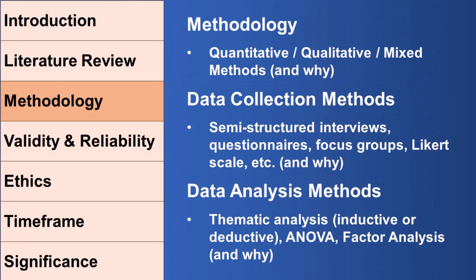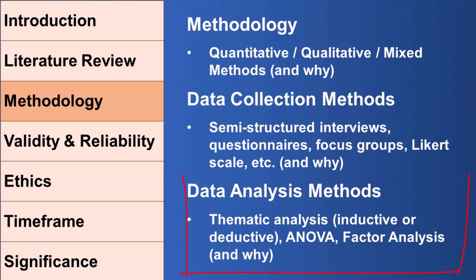Now that you've done your literature review, you would move on to your methodology. The general structure of your methodology section is that you'll start by stating what methodology you're using — whether it's quantitative, qualitative, or a mix of the two. Then you zoom down into the data collection methods, whether it's through interviews, questionnaires, focus groups, Likert scales, or any other way you'll collect your data. Once you've stated that, you move on to your data analysis method — in qualitative studies likely thematic analysis, and in quantitative studies something like an ANOVA (analysis of variance) or factor analysis.